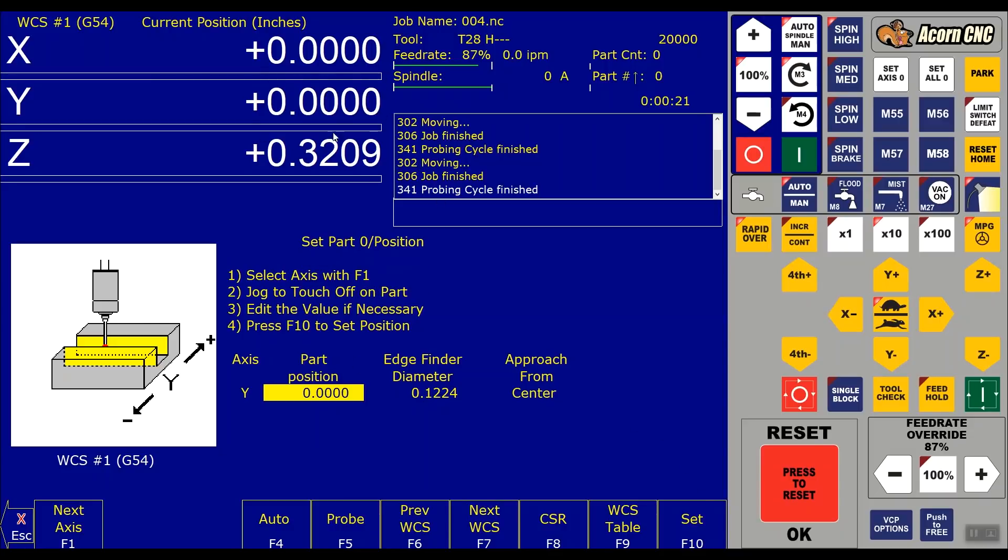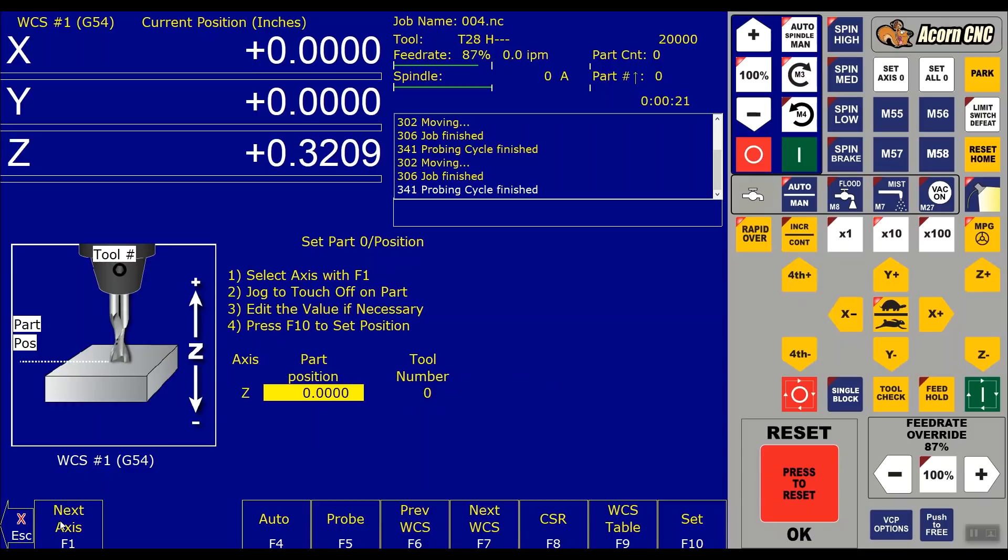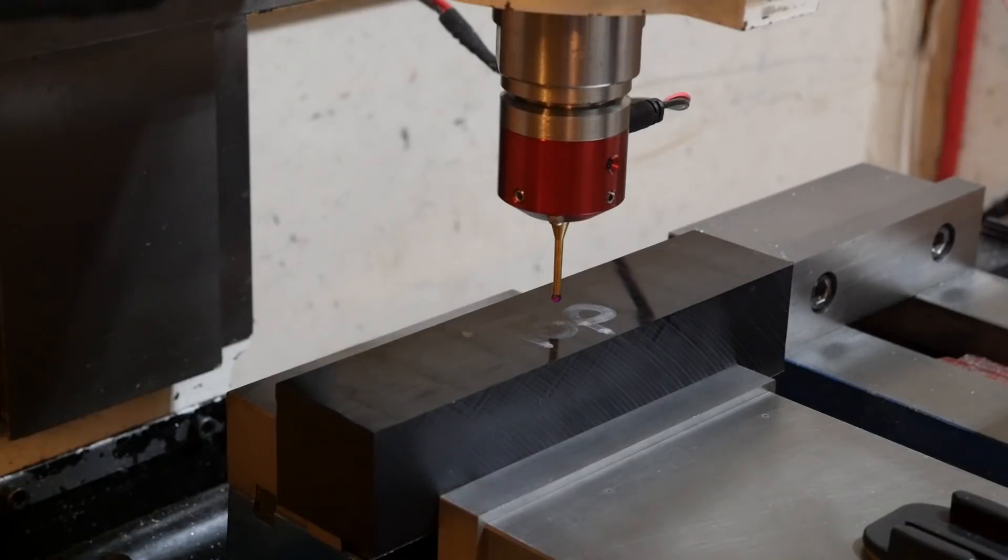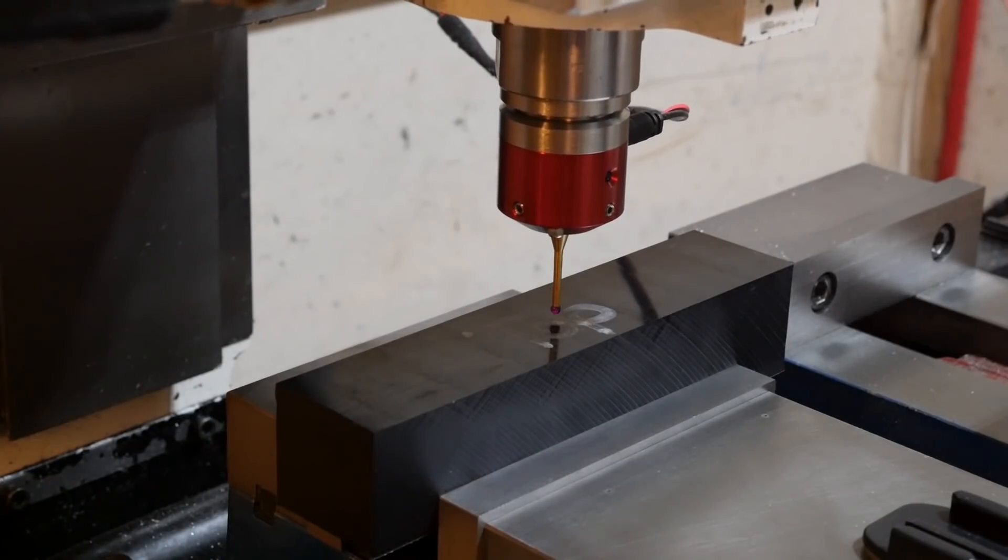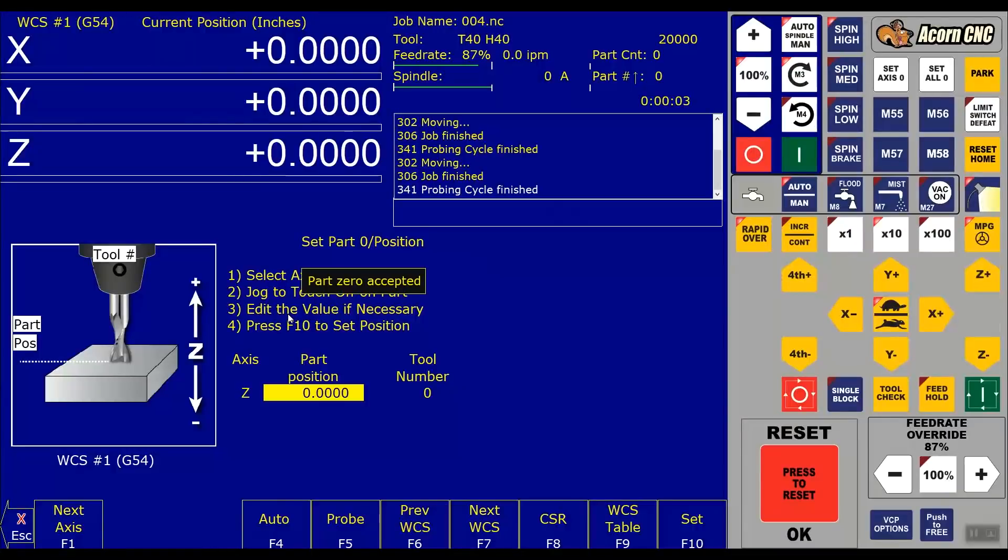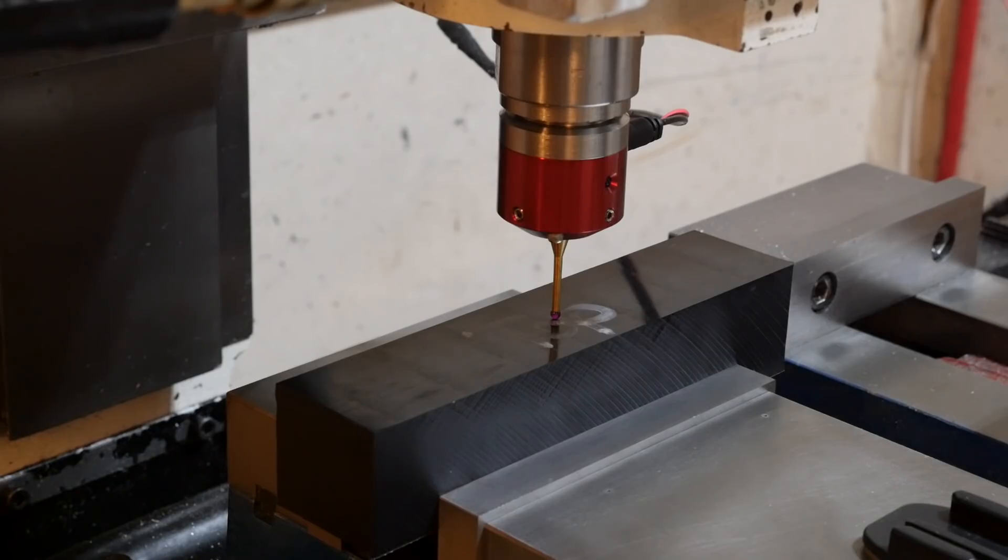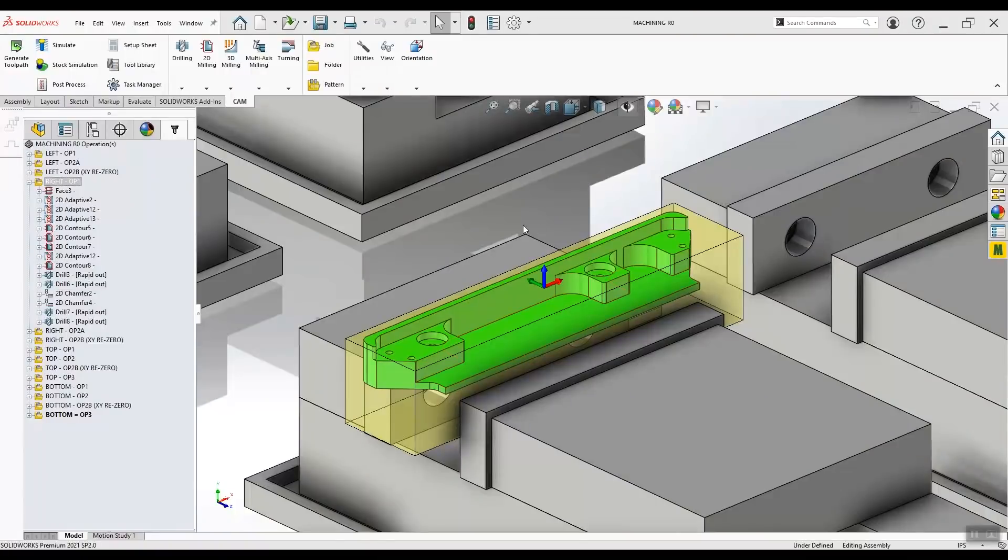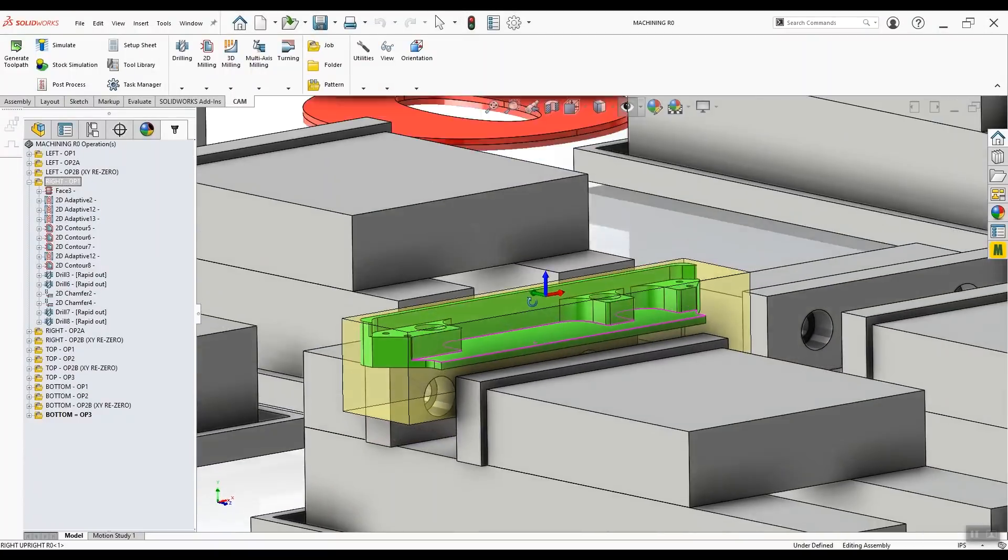Last is to do Z. So we go next axis, auto, we hit cycle start and we've already verified the function. Hit cycle start again and off we go. With this last probing routine finished we get this X0, Y0, Z0 readout on the DRO. So the point that this ruby is touching on the part is our first work coordinate offset which matches what we've got in CAM.